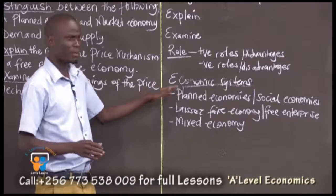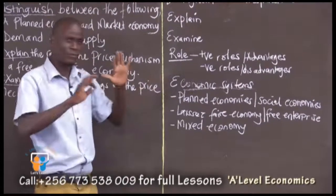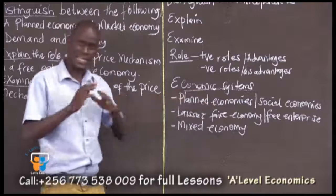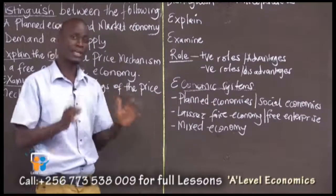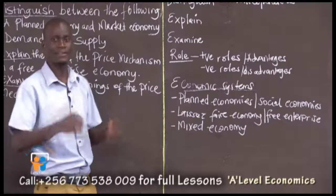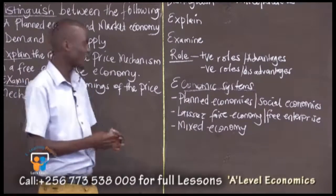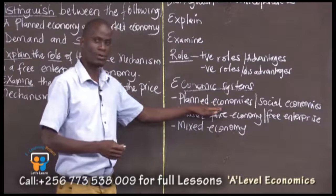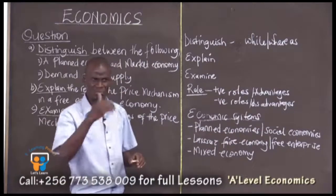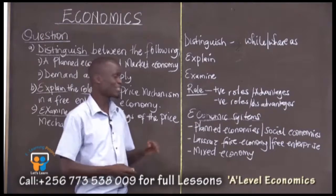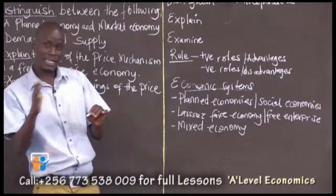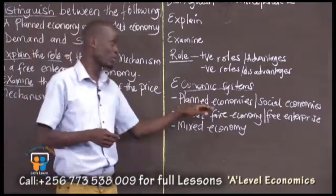A planned economy is an economy in which activities are fully governed by the government. It is the government that decides where to allocate resources, how the resources are going to be used, for what purpose, and in which amounts. The government takes a leading role. They are also called social economies.